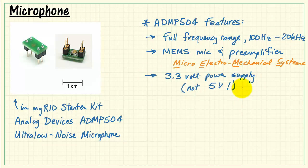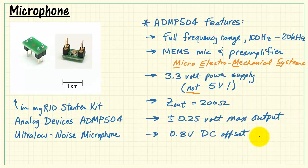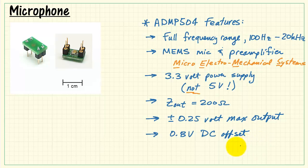This mic requires a 3.3-volt power supply. It cannot use a 5-volt supply. That would be too much. So 3.3 only. The output impedance of the mic is 200 ohms. It produces a signal of up to ±0.25 volts, and that signal is sitting on a DC offset of 0.8 volts.